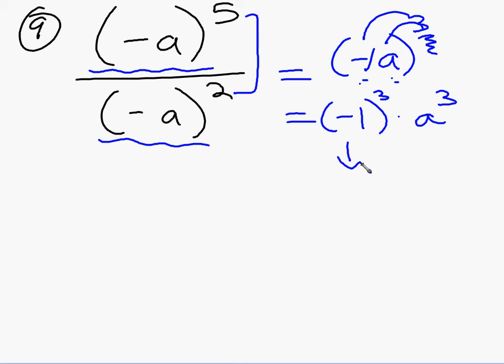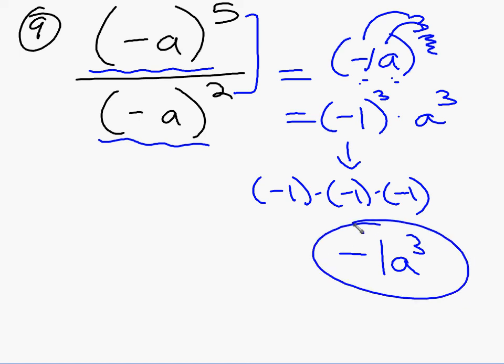What is negative 1 to the third? Isn't it negative 1 times negative 1 times negative 1? Which is just going to be negative 1, isn't it? So my final answer, I could write this as negative 1 a cubed, like that.